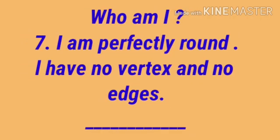Next section: Who am I? Number 7: I am perfectly round. I have no vertex and no edges. So who am I? Yes children, I know you can write it. You all can write this answer very easily.